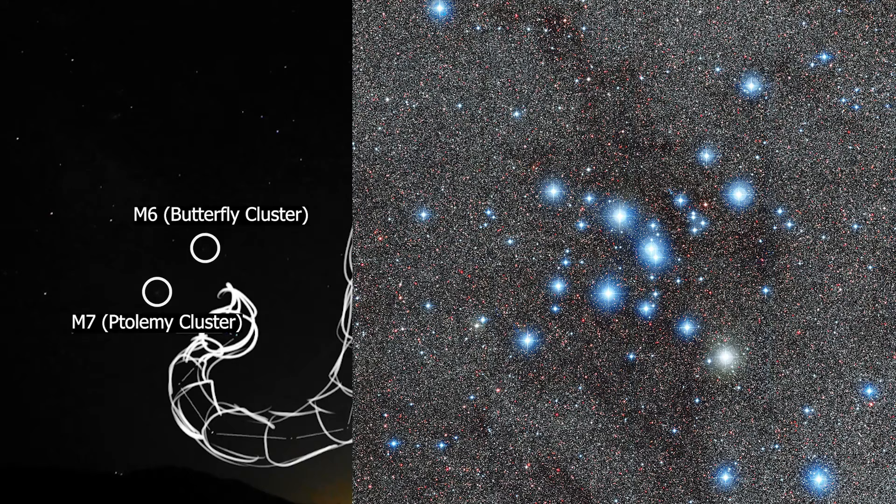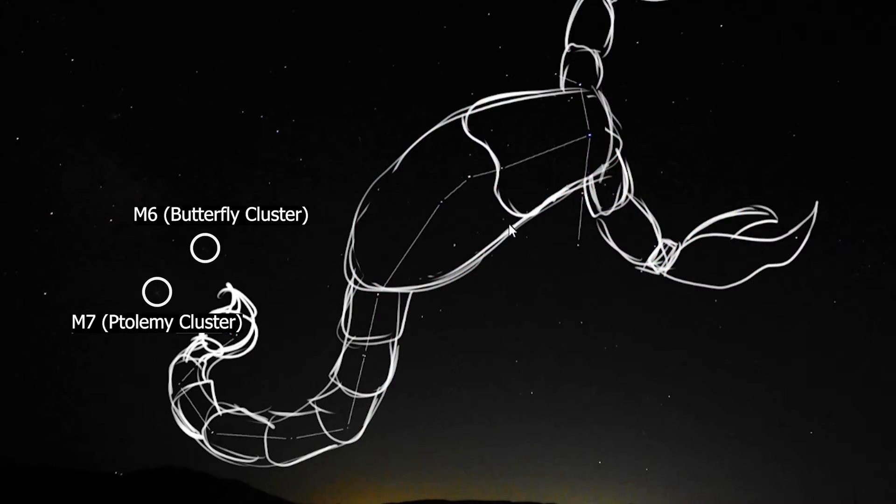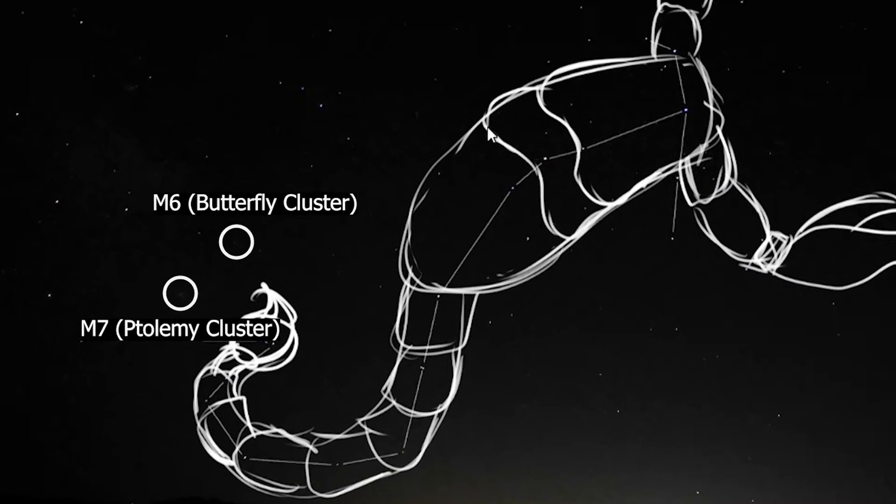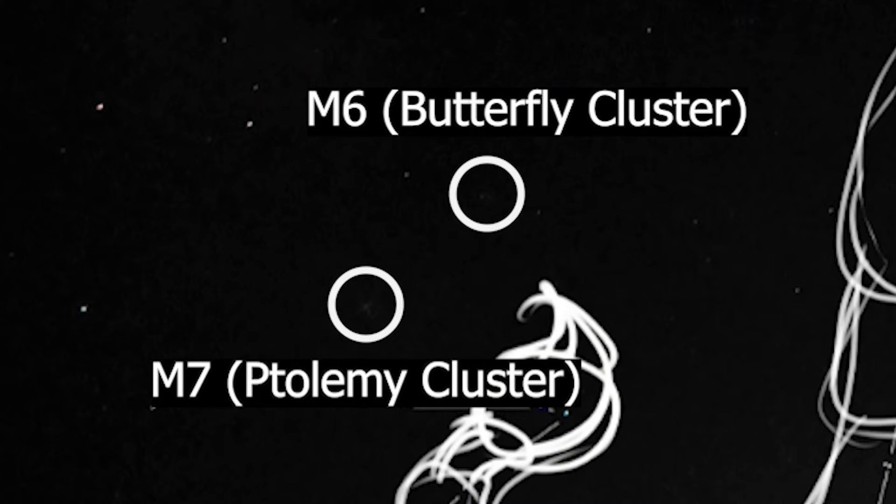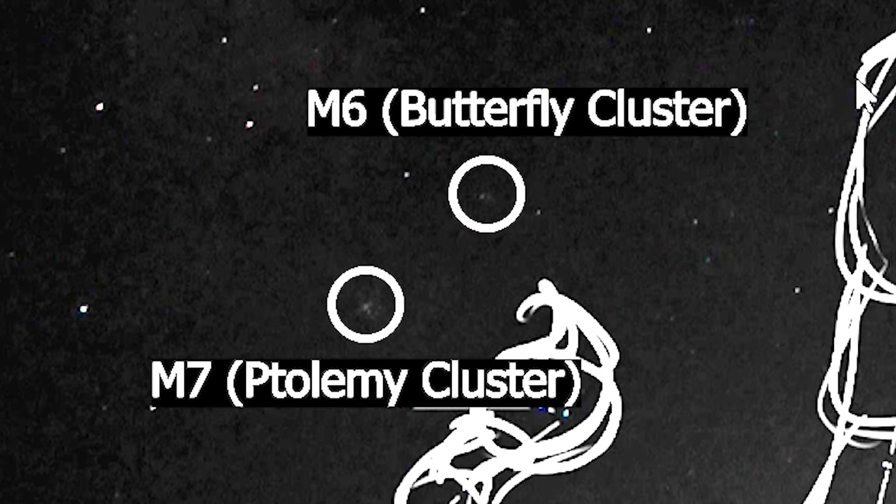Both are open star clusters, meaning they are only loosely bound by mutual gravitational attraction, and they are comprised of thousands of stars. M7 is pretty unique because you can easily see it without a telescope. Both are actually visible in my photo right here.